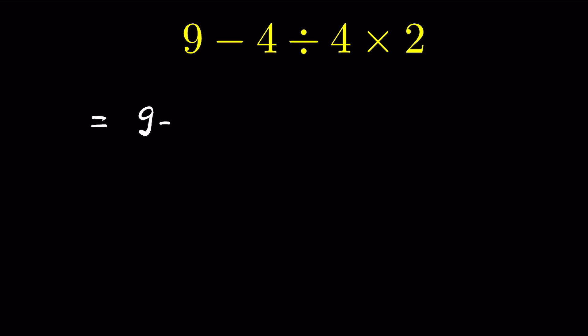According to that rule, 9 minus 4 divided by 4 times 2—reading left to right, we have division first. So 4 divided by 4 will be 1 times 2. Now before subtraction, we must do the multiplication because subtraction comes last. So 9 minus 2 equals 7. 7 is the correct answer.